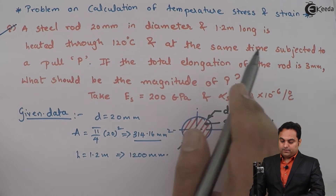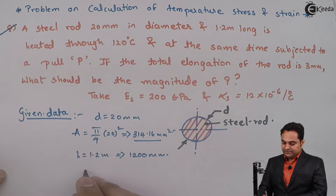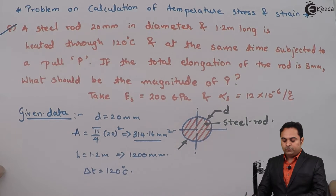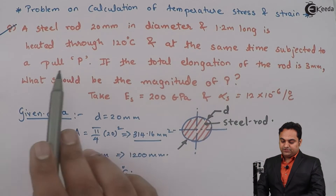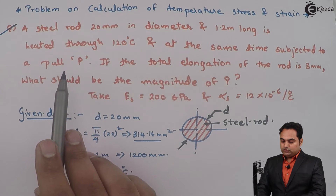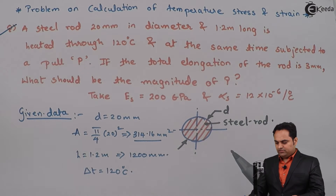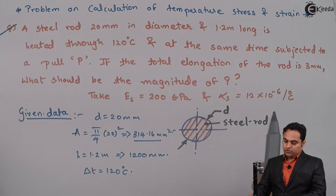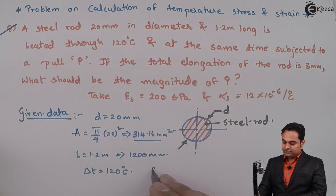The length is 1200 mm. It is heated through 120°C, so the change in temperature ΔT = 120°C. At the same time it is subjected to a pull P — the rod is pulled while being heated. The total elongation of the rod is delta L = 3 mm.